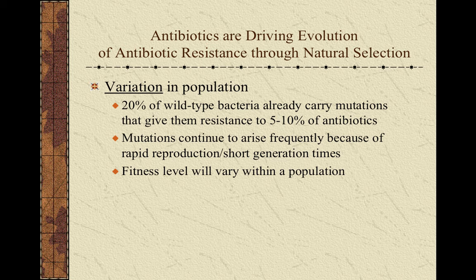If you think about the process of natural selection and how we describe that process through the acronym VIST, we can follow along in more detail. As with any population, there is always going to be variation in a population of bacteria. If we take a random sample of bacteria, some of them will already have mutations that give them resistance to our antibiotics, simply because they have genes to make many different kinds of chemicals. In addition, bacteria are constantly gaining new mutations, which occur frequently because they reproduce so fast — mutations occur naturally during the process of DNA synthesis as bacteria multiply their genetic information prior to dividing.